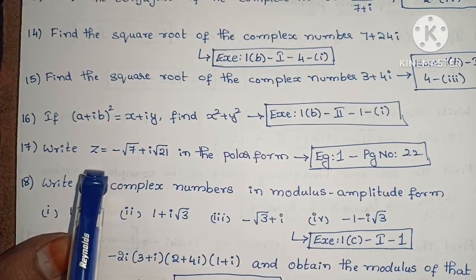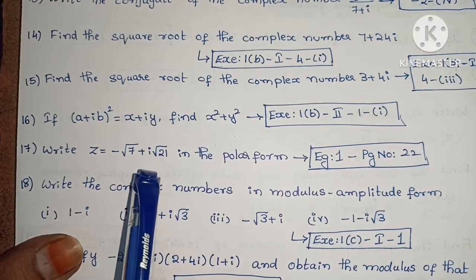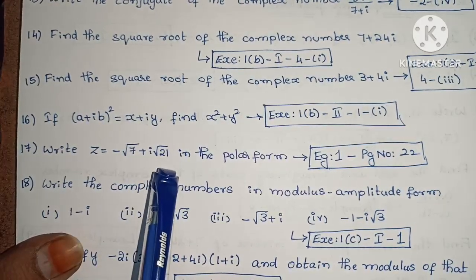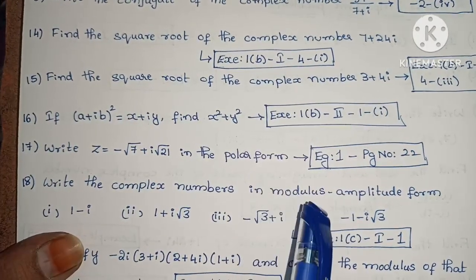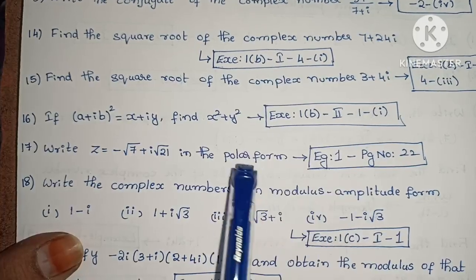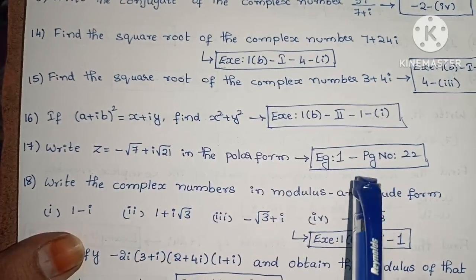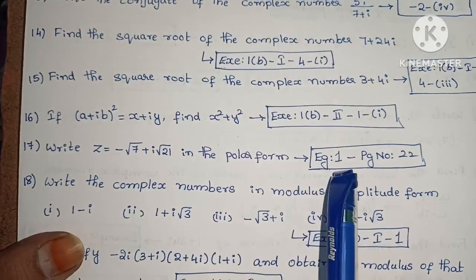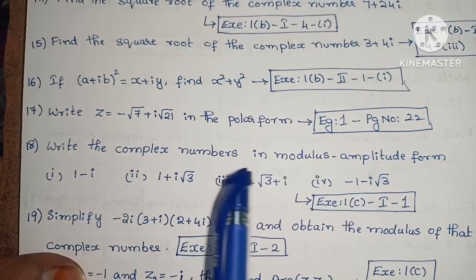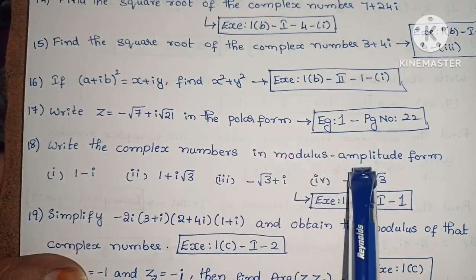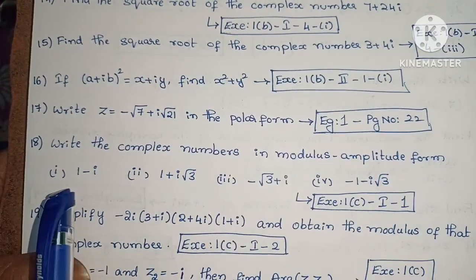Next, write z equals minus root 7 plus i root 21 in the polar form. Polar form is also called modulus amplitude form. Example 1, page number 22. Next, write the complex numbers in the modulus amplitude form.